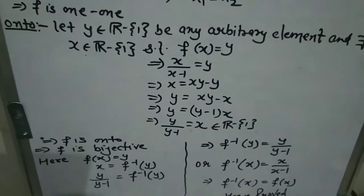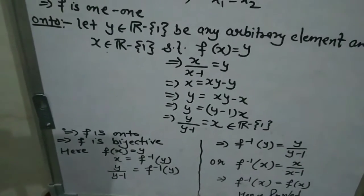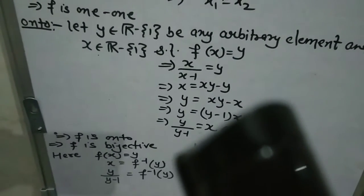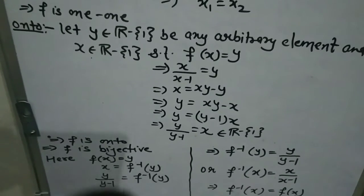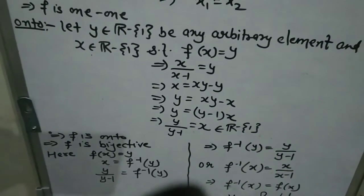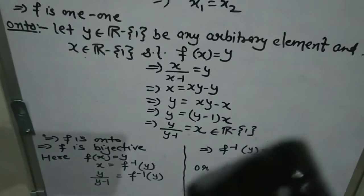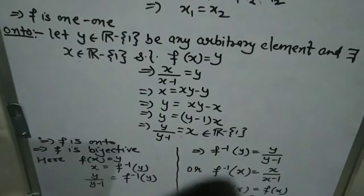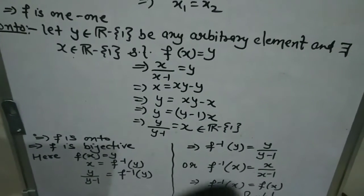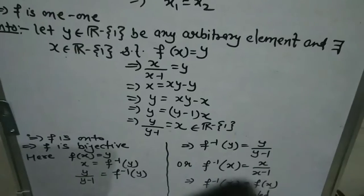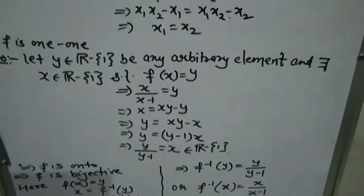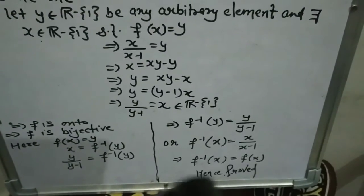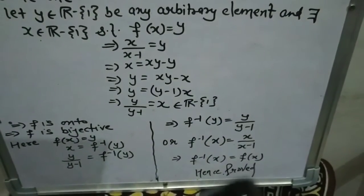Now we find the inverse. Since f(x) = y and x = f⁻¹(y), we substitute the value of x we found: y/(y-1) = f⁻¹(y). So f⁻¹(y) = y/(y-1). Changing the variable makes no difference, so f⁻¹(x) = x/(x-1). And this is exactly our original f(x), which implies f⁻¹(x) = f(x). This is what we needed to show — hence proved.